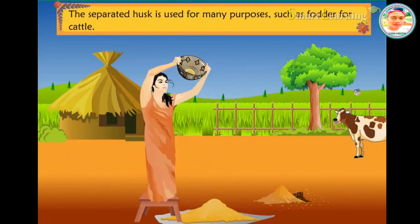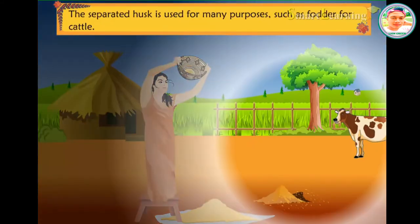The separated husk is used for many purposes such as fodder for cattle.